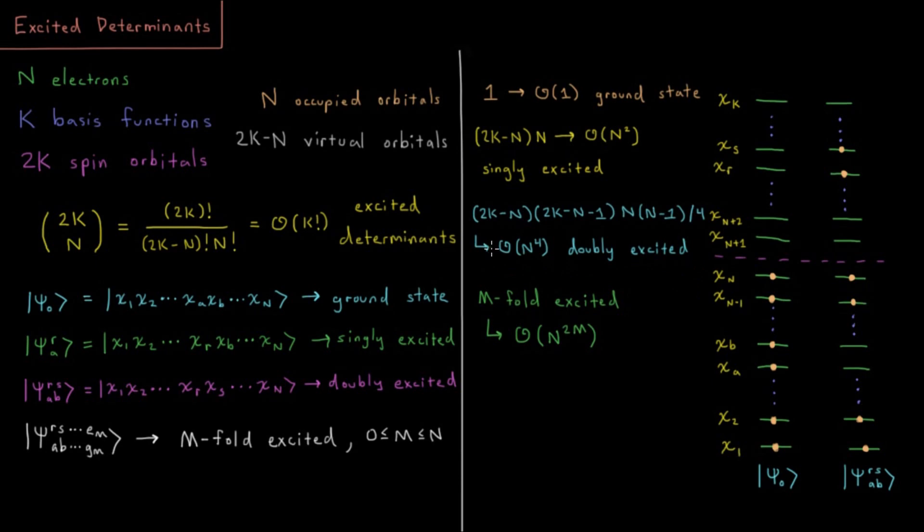If we have for doubly excited determinants, I could take any pair from down here and there's a quadratic number of those pairs, n times n minus 1 over 2, and I move them up to any pair of orbitals up here, 2k minus n times 2k minus n minus 1 over 2. So if k again is proportional to n, then we get a quartic number of doubly excited determinants.